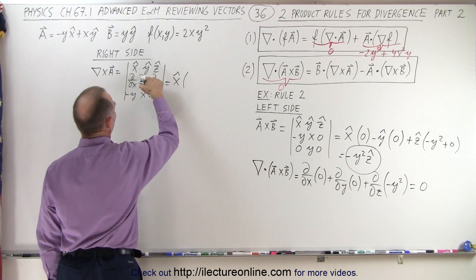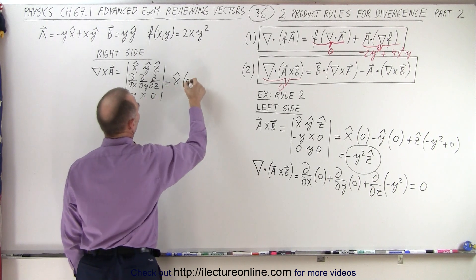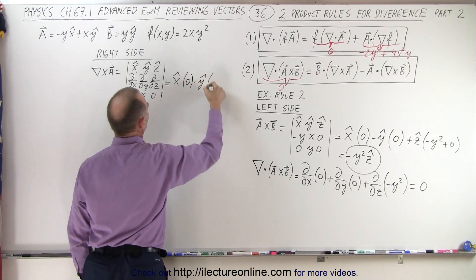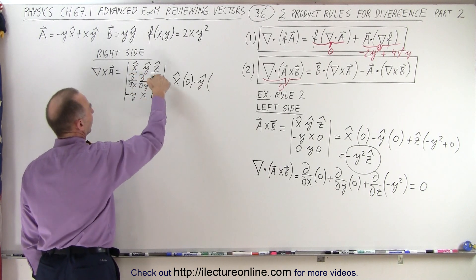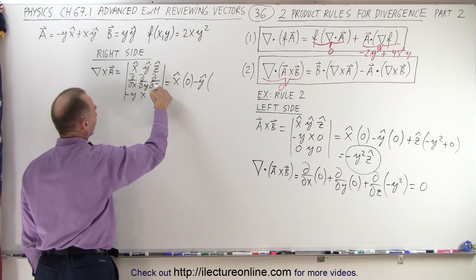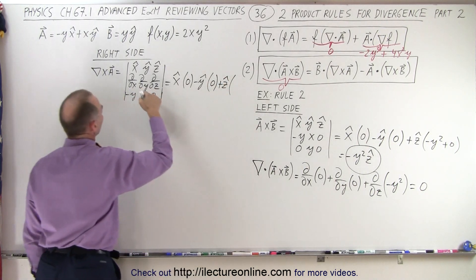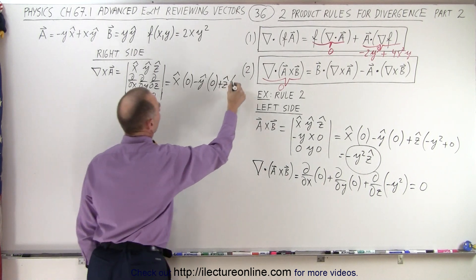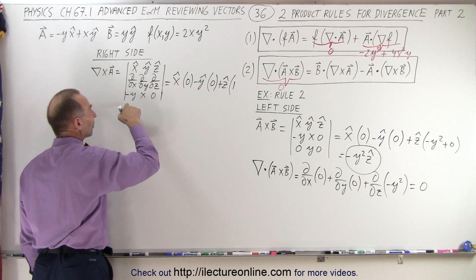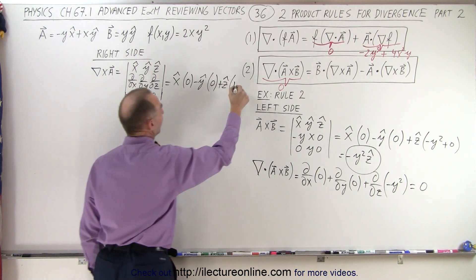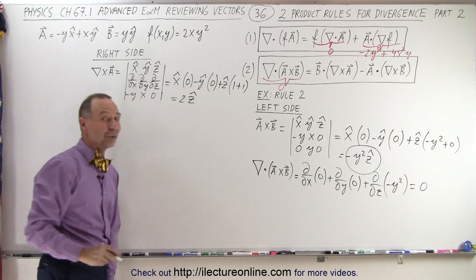X unit vector times the partial with respect to Y of 0 — that's 0 — and the partial with respect to Z of X — that's 0. Then the Y unit vector: the partial with respect to Z of minus Y is also 0. And then the Z unit vector: the partial of X with respect to X is 1, minus the partial with respect to Y of minus Y, which is minus 1, but times the minus that becomes plus 1. So this ends up being 2 in the Z direction.